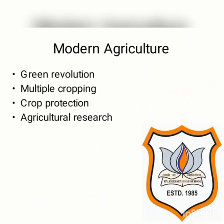Dear students, today in this video I am going to discuss about modern agriculture. As we have seen, Indian traditional agriculture uses organic manure, seeds, simple plow, bullocks and primary instruments, which give very less productivity. Therefore, since 1966, modern agriculture emerged in India, which uses modern inputs like hybrid seeds, chemical fertilizers, pesticides, new machines of agriculture, as well as irrigation.